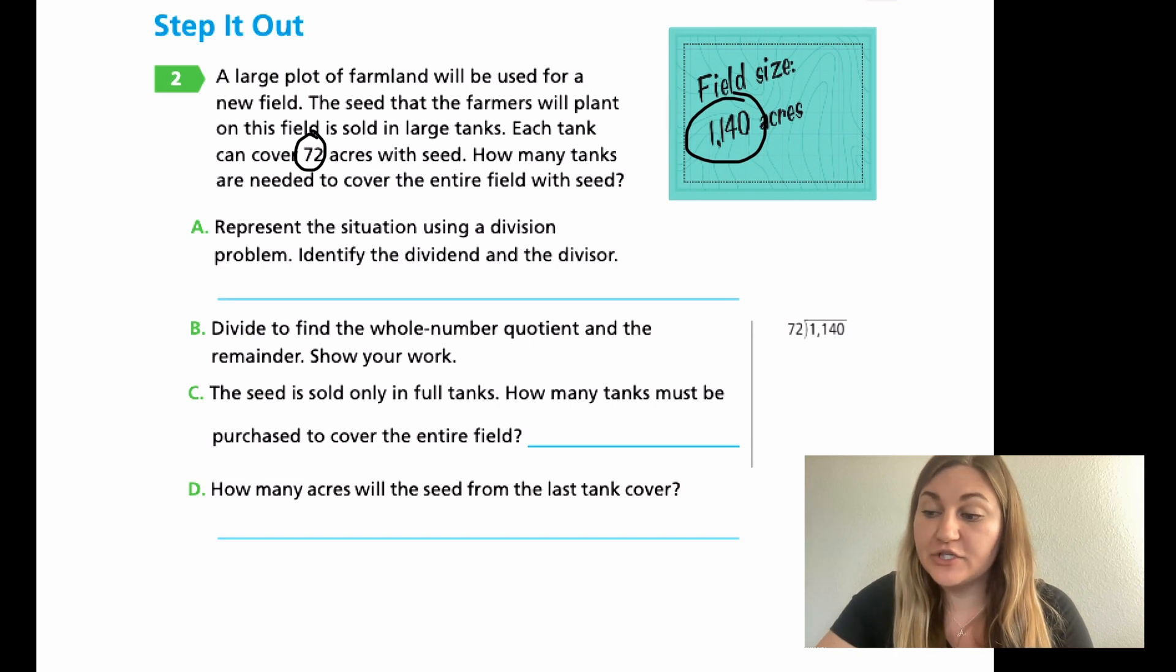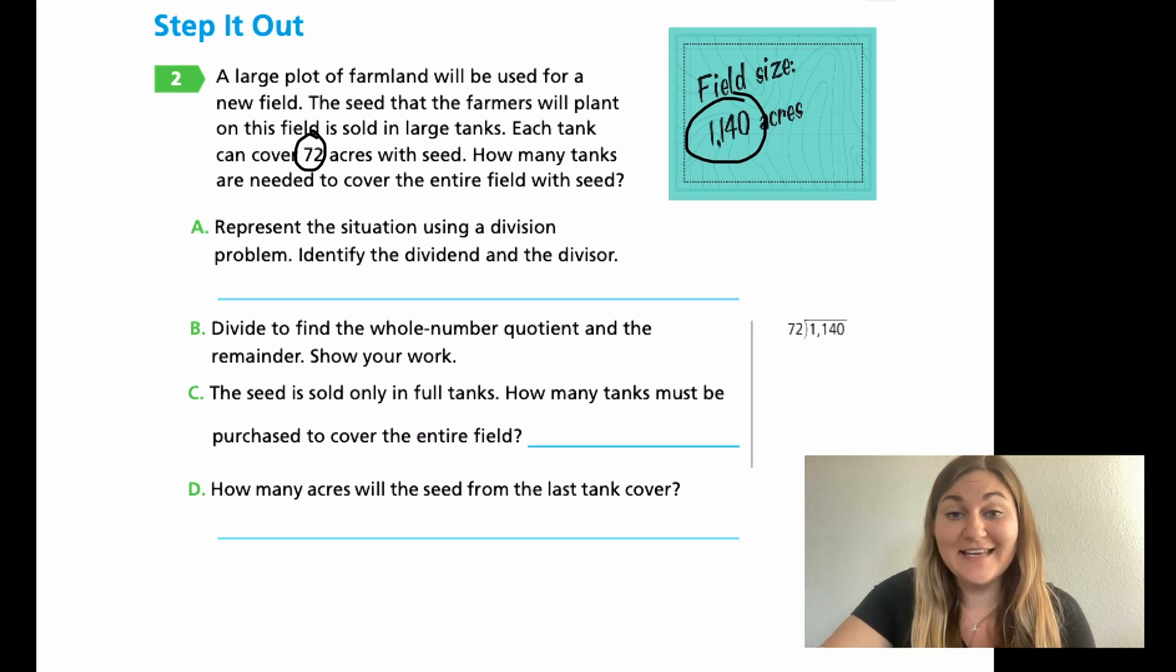Part A, we want to represent the situation using a division problem. You want to write the division problem and identify the dividend and the divisor. Part B, then we want to divide to find the whole number quotient and the remainder. You're going to be using the problem over to the right that they set up for you. Part C, the seed is sold only in full tanks. How many tanks must be purchased to cover the entire field? Remember, if you have a remainder, you still have some of the field to cover. You're not allowed to be short. You have to buy an entire new tank to fill up the entire field. You need to cover the whole field for this, which means you need to round up. Part D, how many acres will the seed from last tank cover? I'm going to have you go ahead and solve A, B, C, and D. I'm going to have you hit pause here.